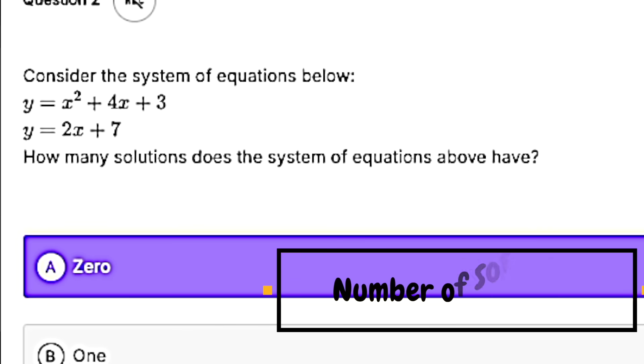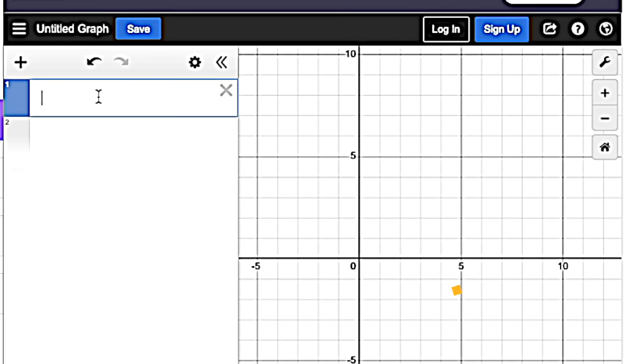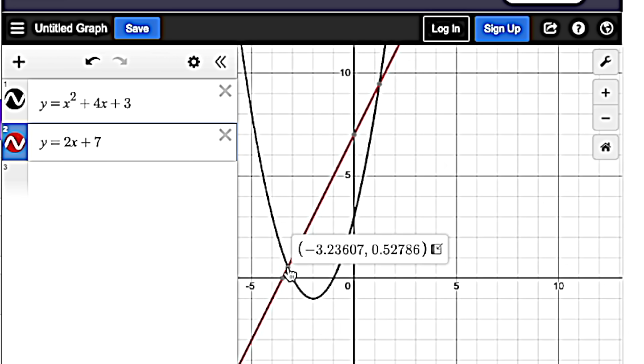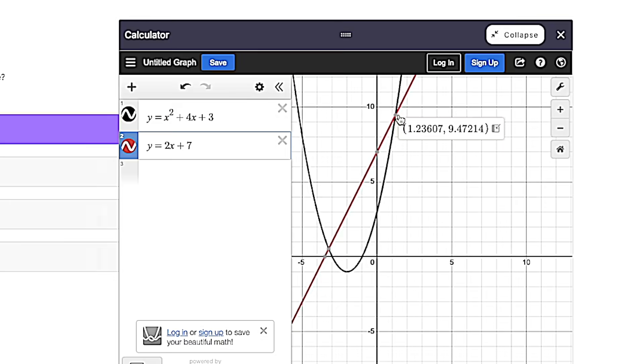Desmos will easily show us number of solutions questions. You just put in your system of equations. And remember that a solution is wherever they cross and touch each other. We have one point here and we have one point here. So that's two solutions.